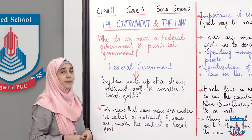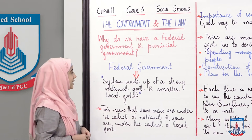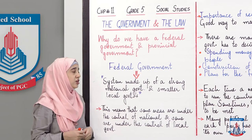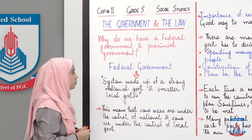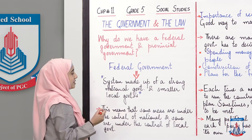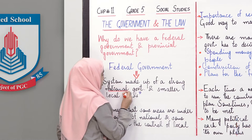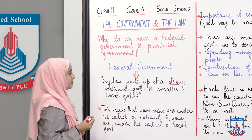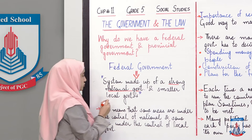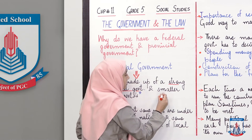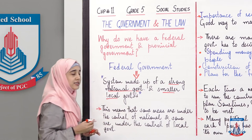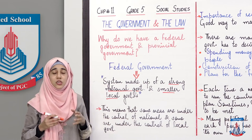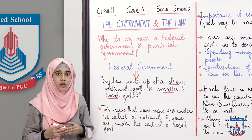Sab se pehle baat karte hai apni federal government ke baare mein. It is a system made up of a strong national government and smaller local governments. Humari federal government do governments se banti hai - ek strong national government aur chote ilaqon ki choti choti governments jo wahaan ke masail ko hal karti hai.